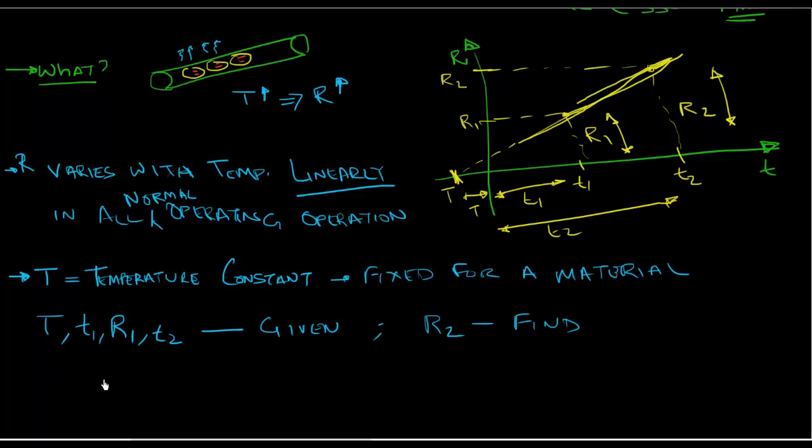So these are given to us or we know that. And we're supposed to find out R2. So the relationship here is R2 over R1 is equal to T plus T2 over T plus T1. How do we get this relationship? I am going to show you right now.